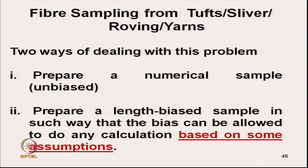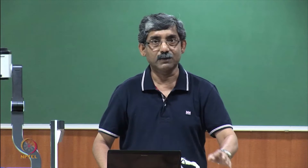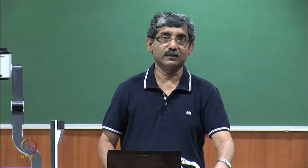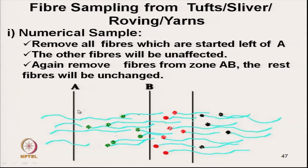There are two different types of sampling techniques we follow. One is called numerical sampling, which is totally unbiased. Another technique is to prepare a length-biased sample and then make some assumptions so that in calculation we can take care of that. In numerical sampling, if we remove some portion of fibres, those fibres will not affect the proportion of the remaining bulk.